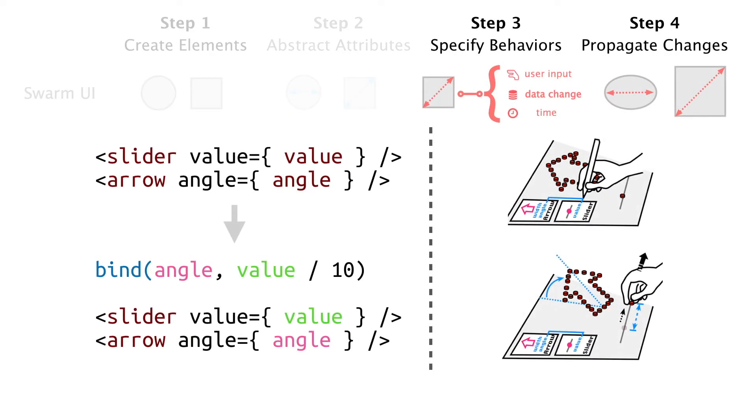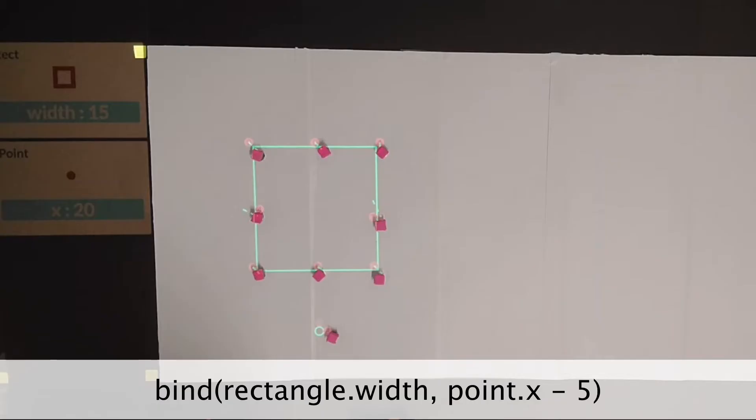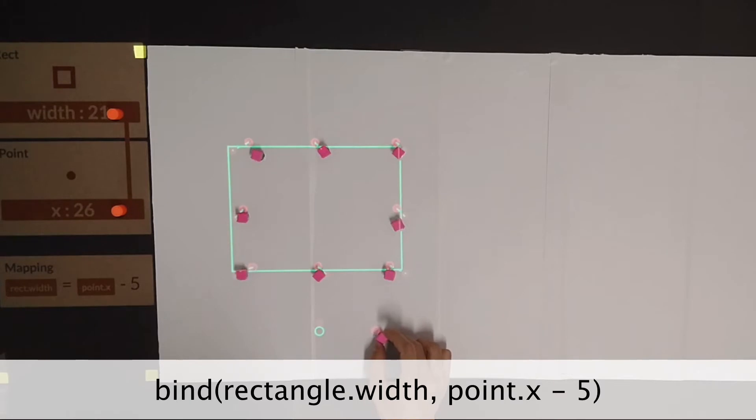Once attributes are defined, the user can specify behavior through data bindings. The user can simply connect attributes to specify data bindings. Once connected, the system automatically tracks the value and changes the shape in response to user inputs.